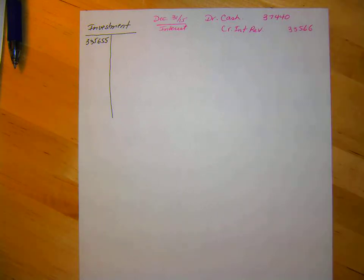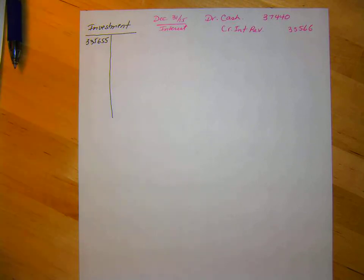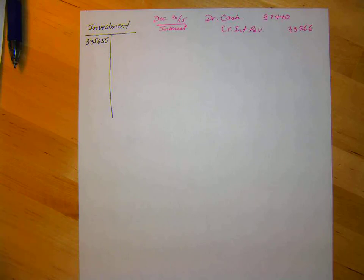Just to prepare you for ACCT 316: we don't always buy bonds on an interest date. If they gave interest in March and we bought at a different time, we would have to prorate the entries. Don't worry about that now. When we do bonds, I won't be with you, but when you do bonds next semester in 316, you'll cover that.